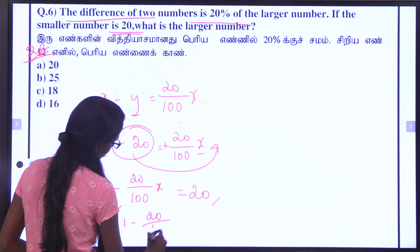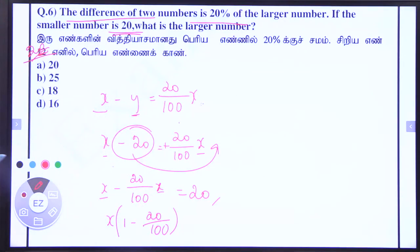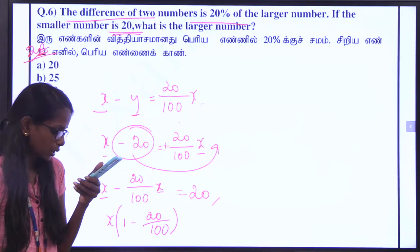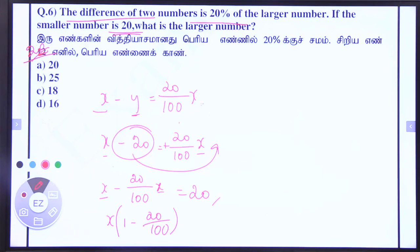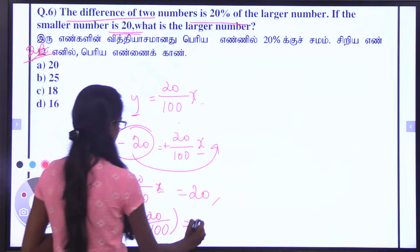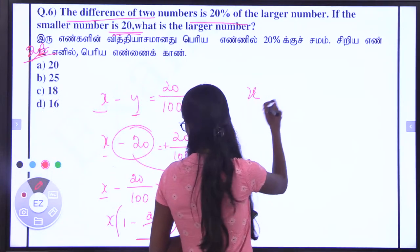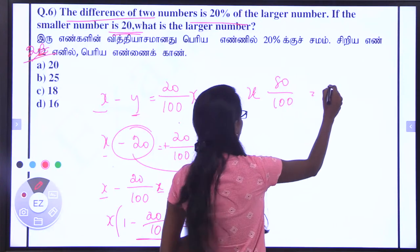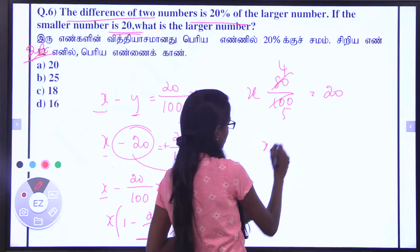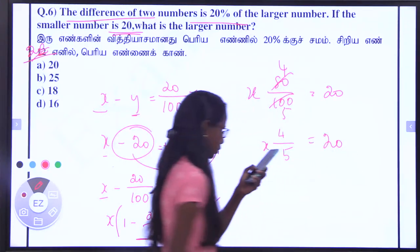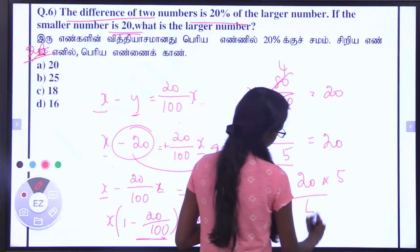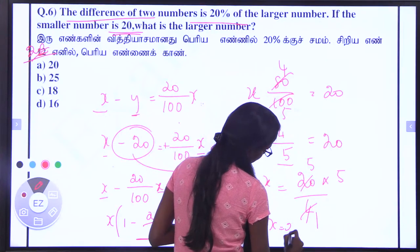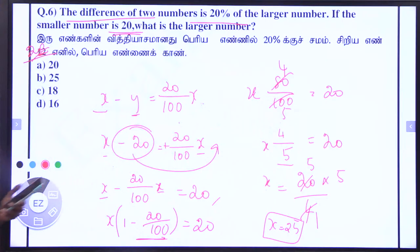The main step is 1 minus 20 divided by 100 times x equals 20. Solving: 80 divided by 100 equals 20, so x into 4 divided by 5 equals 20. Therefore x equals 20 into 5 divided by 4. Since we assumed x is the larger number, x equals 25. Answer: option B.